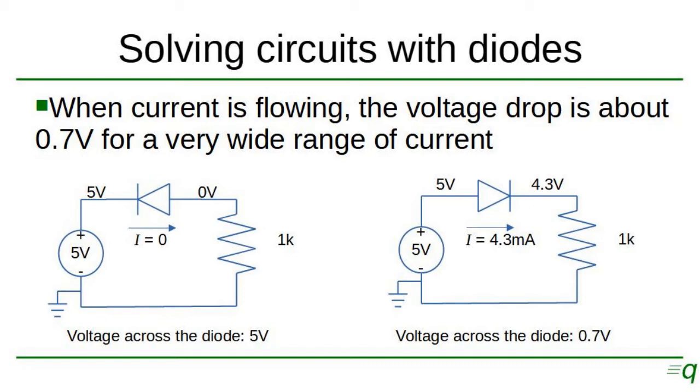Now, that 0.7 volts may not be much if you are working on a circuit with 24 volts, but if you're working with a circuit with 3.3 volts, after the diode you are left with only 2.6. So that 0.7 voltage drop on the diode is something that you have to keep in mind when working with low voltage circuits.